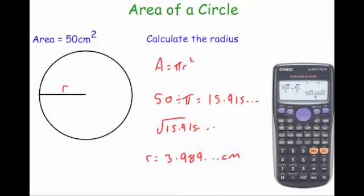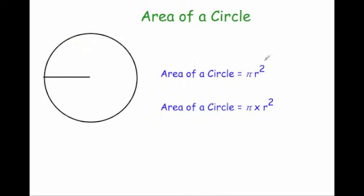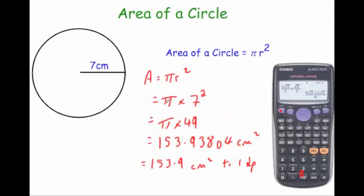So to find the area of a circle, use the formula pi r squared. You square the radius and then times it by pi. So an example would be here we had 7. So we square that, that's 49 times by pi. And we get the area of the circle.